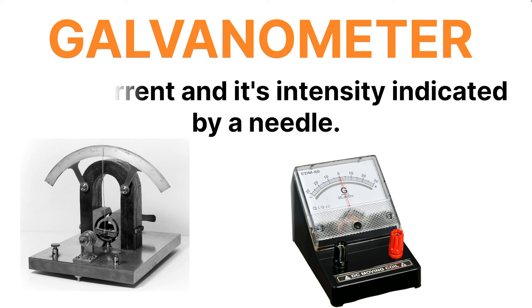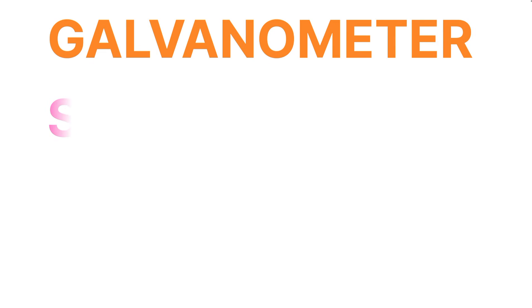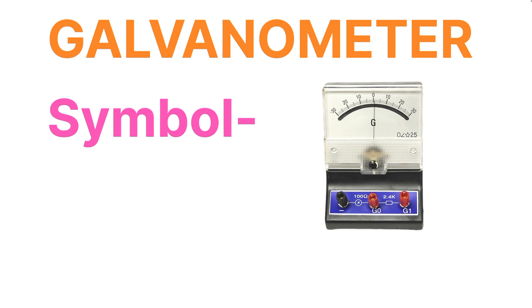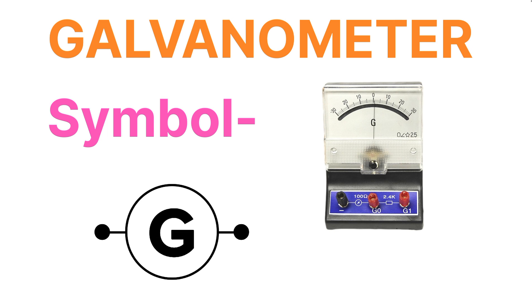Without looking at the needle in the galvanometer, we can't detect the current intensity or magnitude. Now let's talk about the symbol for the galvanometer. The galvanometer actually looks like this, and the symbol for the galvanometer is shown here. You can see the symbol in the image — this is the complete basic information about the galvanometer.